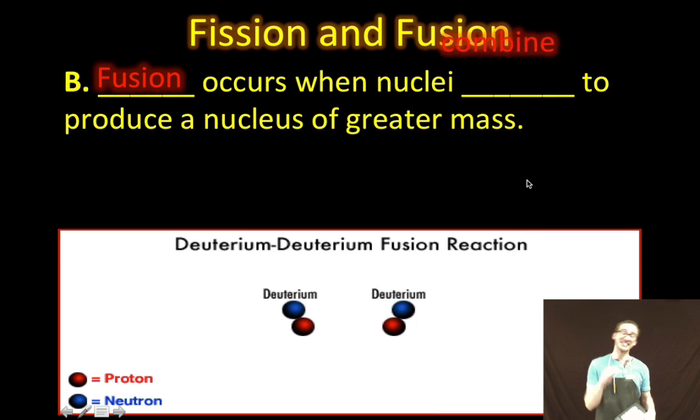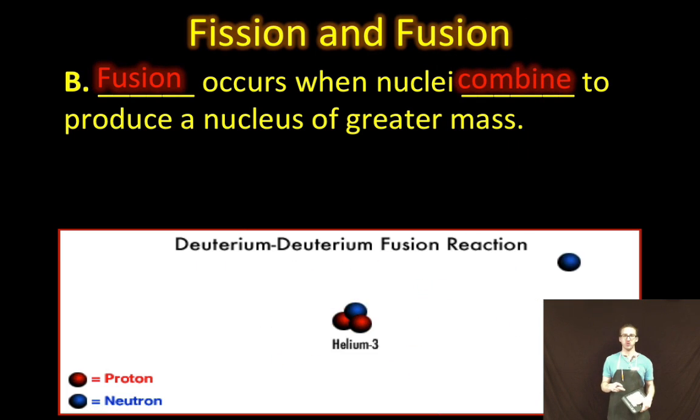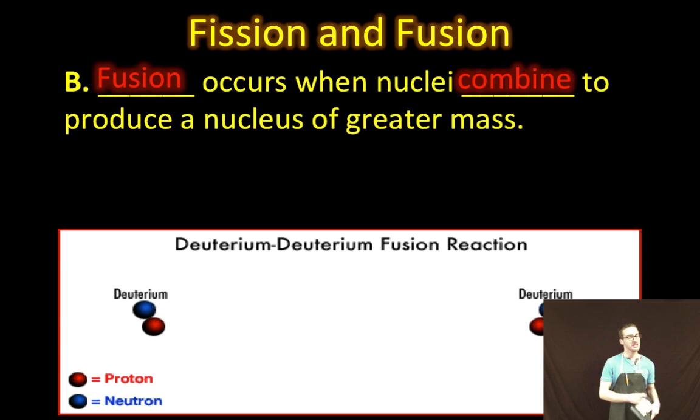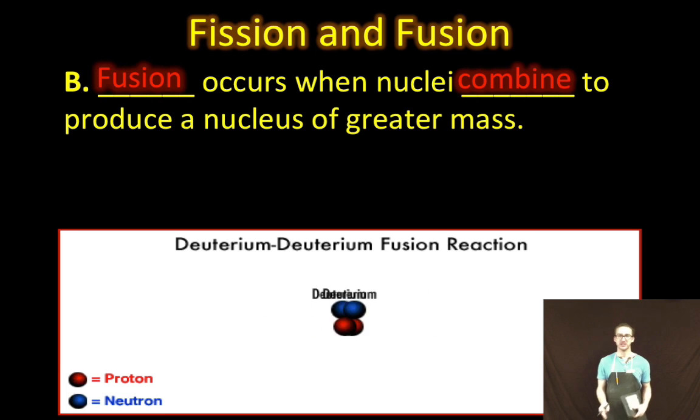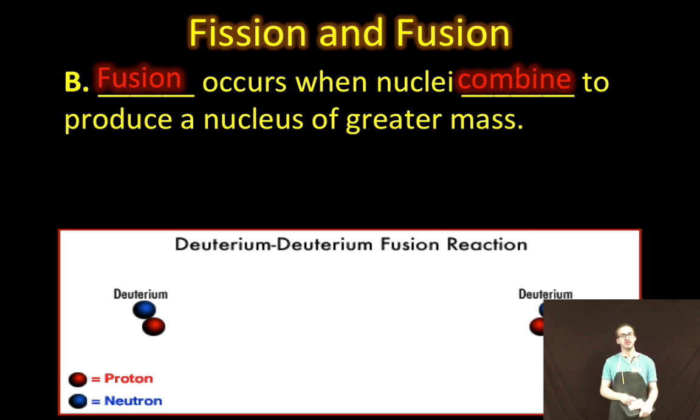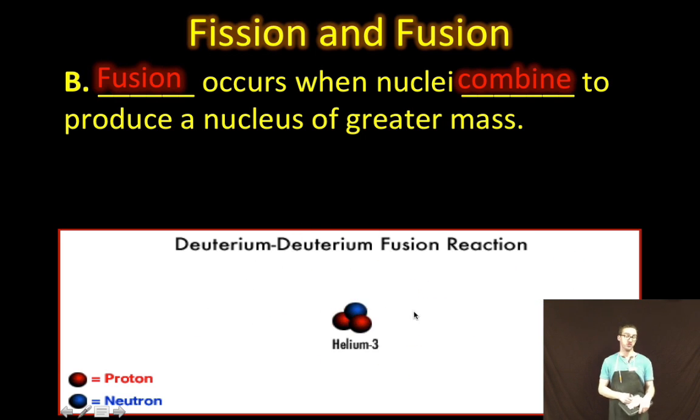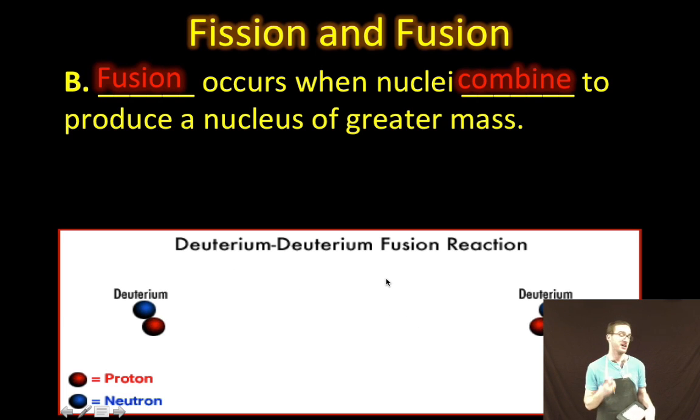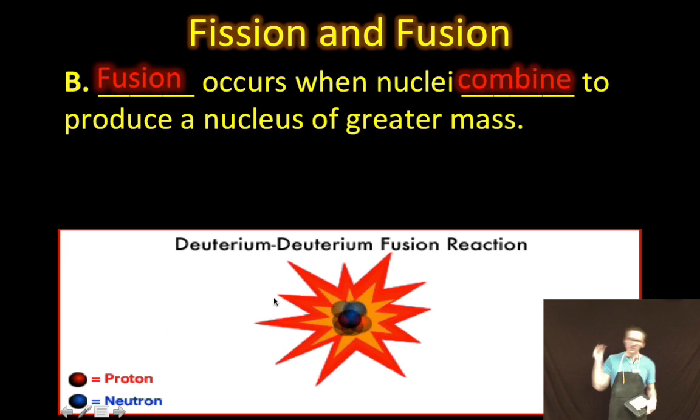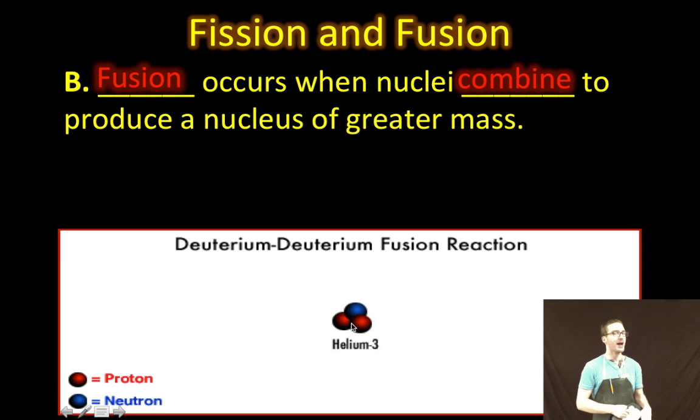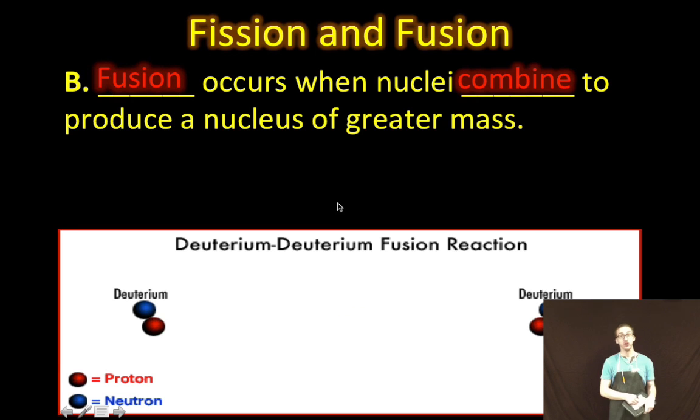Now, there's a second type of nuclear reaction we want to be comfortable with, and that is called a fusion reaction. Here, instead of splitting a large nucleus, we're combining smaller ones to make a larger one, fusing them together. To take a look at this animation, we've got two atoms or nucleides of deuterium, which is hydrogen that has a mass of two. As we slam those things together, we create a larger atom of helium-3. Fusion!